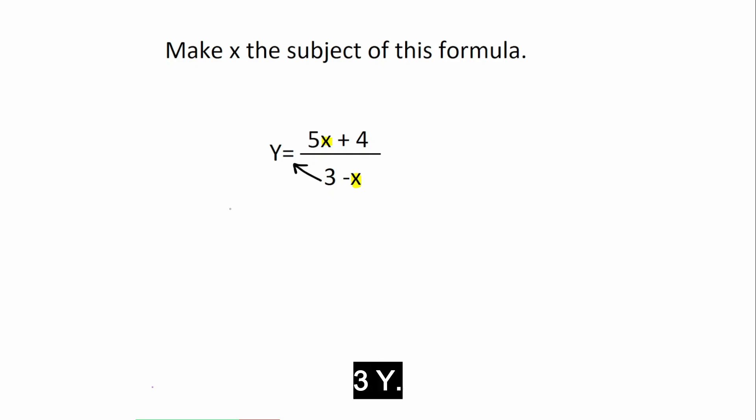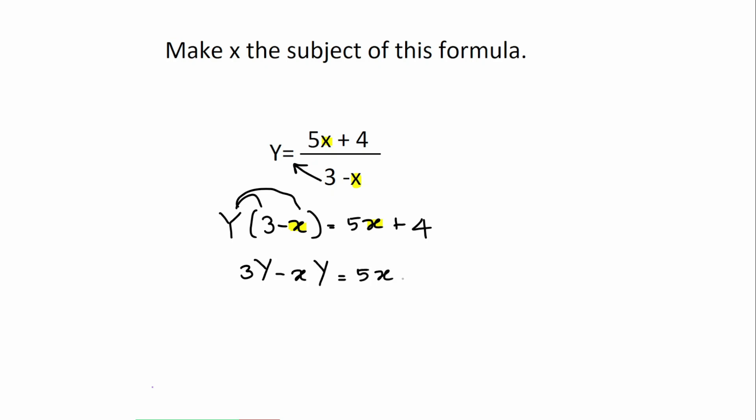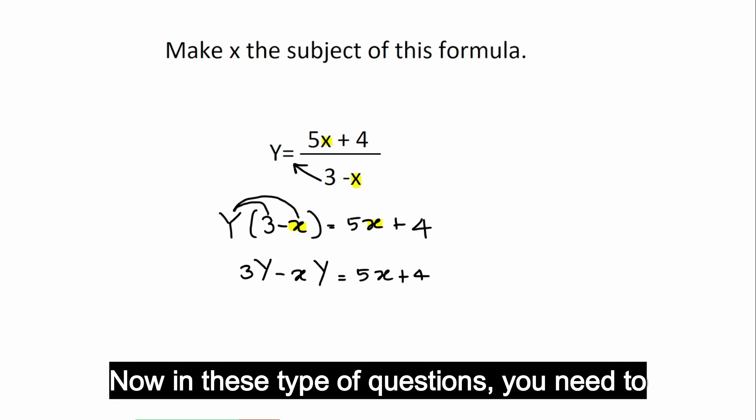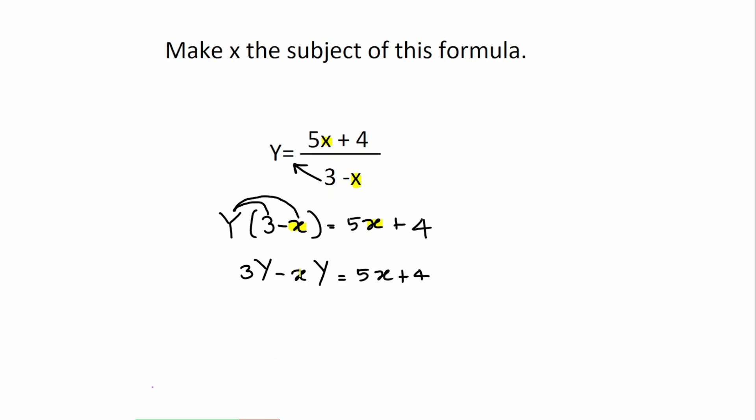3 times y, 3 capital Y, take away y times x, lowercase x, capital Y, is equal to, on the right-hand side, it's just 5x at 4. Now, in this type of questions, you need to track where your x is. You've got an x here and you've got the other x here.